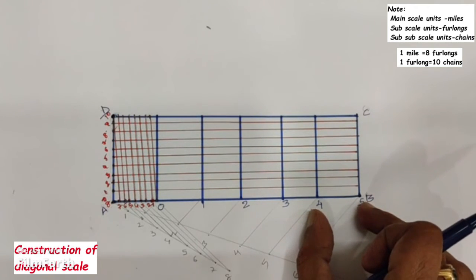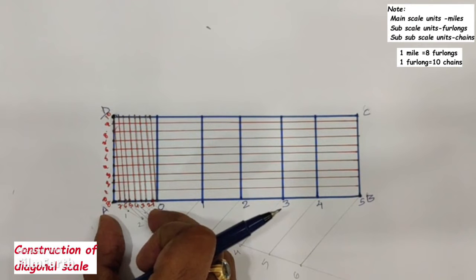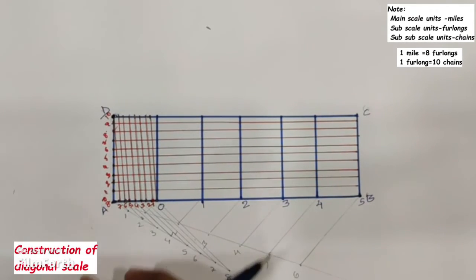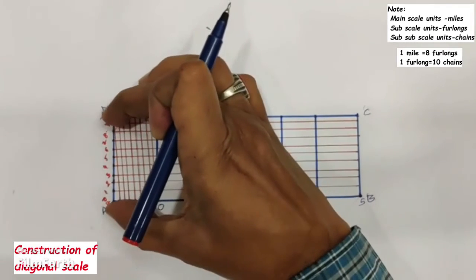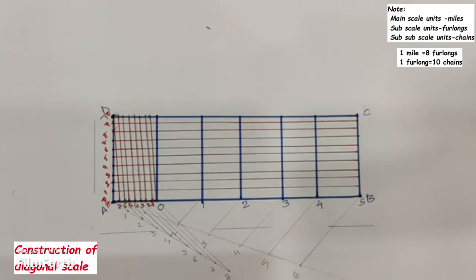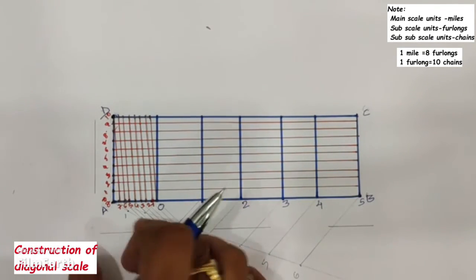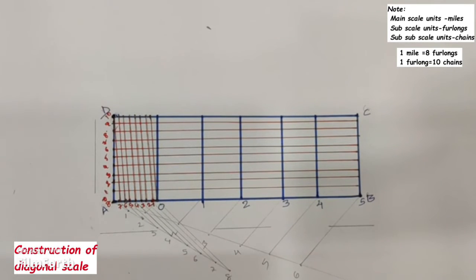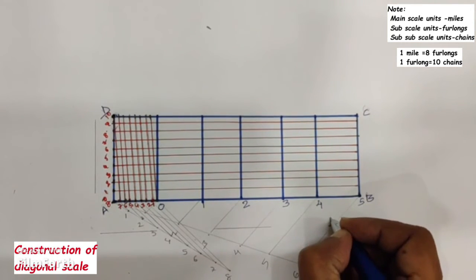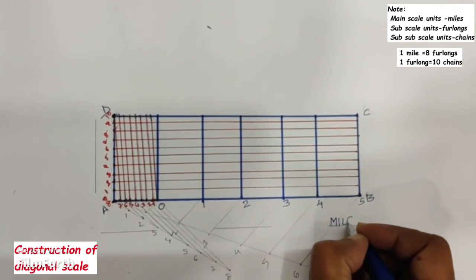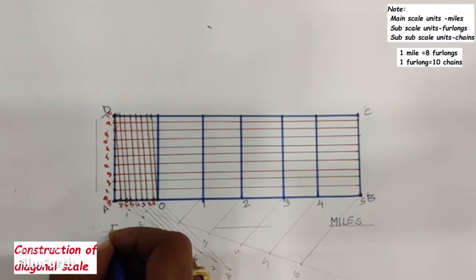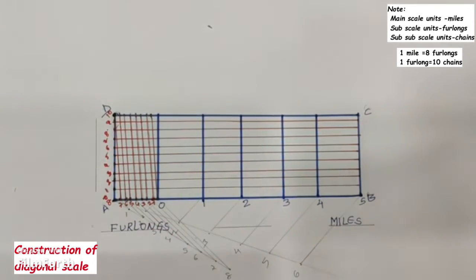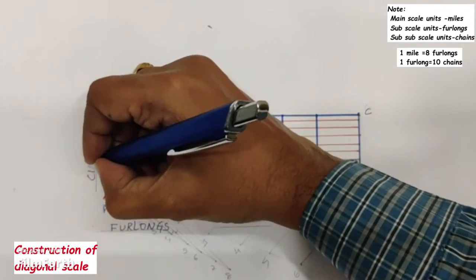Now we write the scale unit labels. Main scale units are in terms of miles, subscale units are in terms of furlongs, and sub-subscale units are in terms of chains. One mile equals eight furlongs and one furlong equals ten chains.